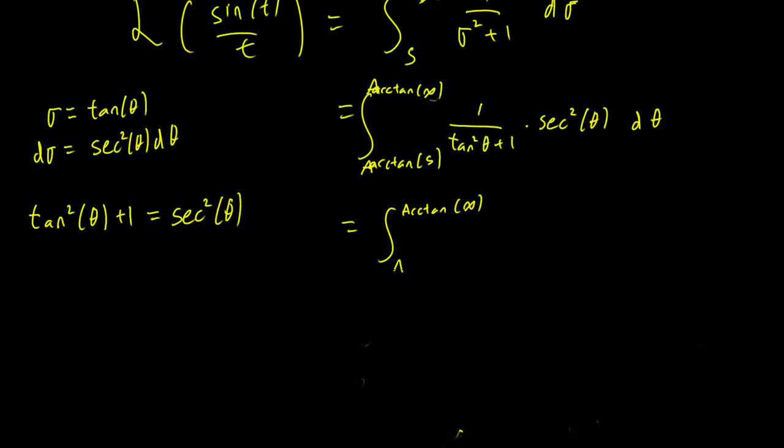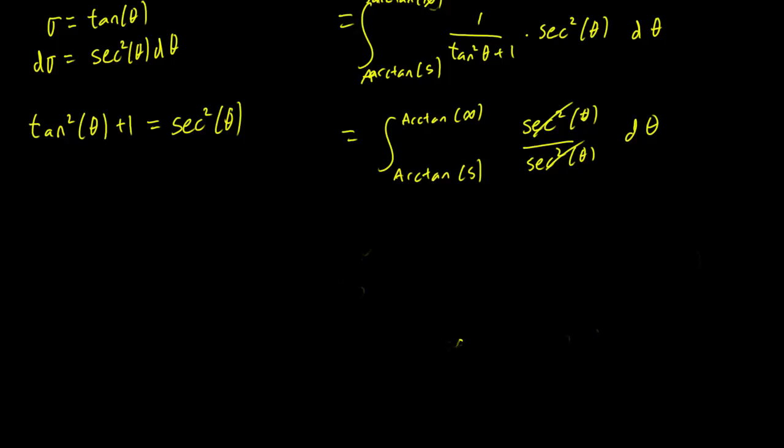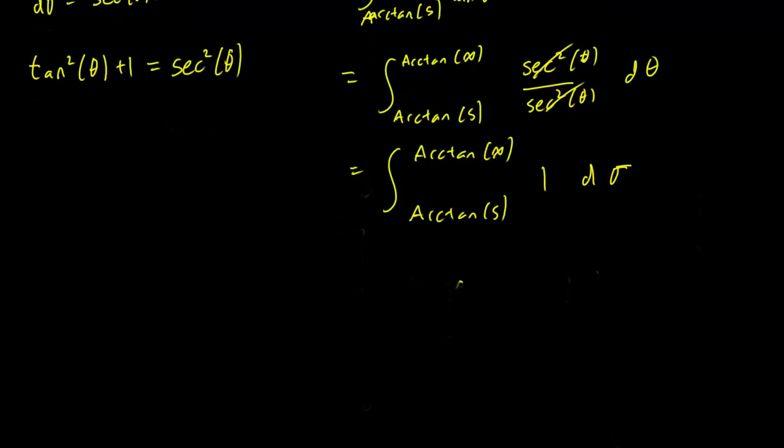And this gets us secant squared theta over secant squared theta d theta, which of course cancels, and we have from arctan of infinity to arctan of s, 1 d theta.